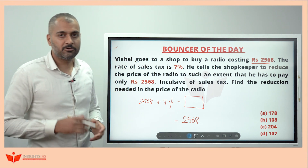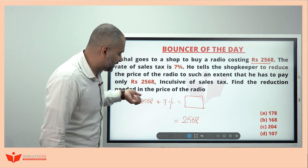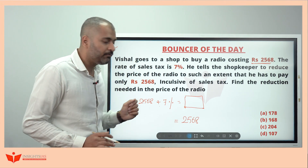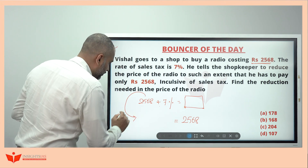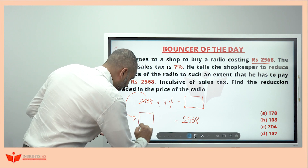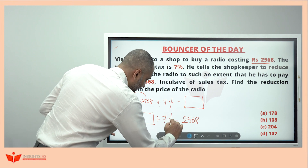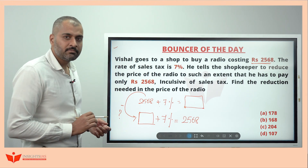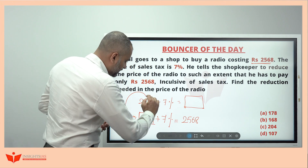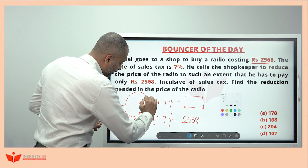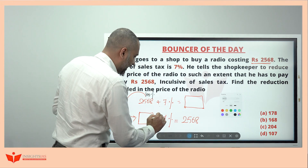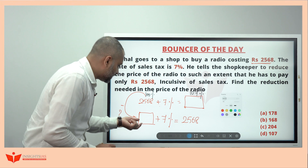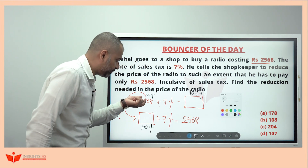The shopkeeper has to reduce the price. If you take 2568 and add 7%, that is definitely more than 2568. So the shopkeeper has to reduce the amount so that after adding 7% it equals 2568. Now, consider the original 2568 as 100%. With 7% tax, the total becomes 107%.